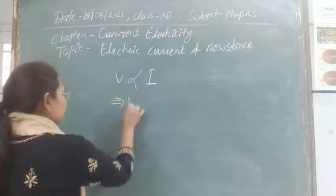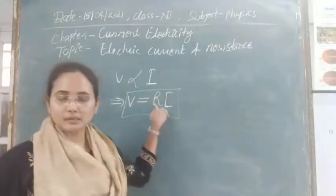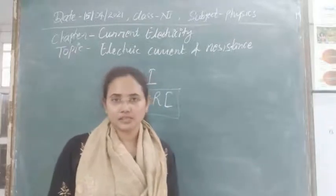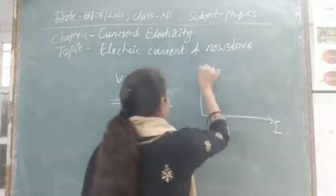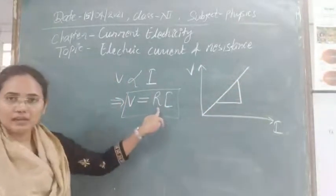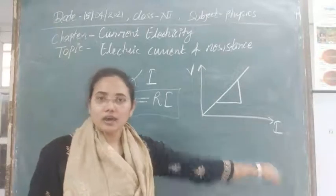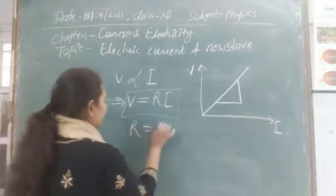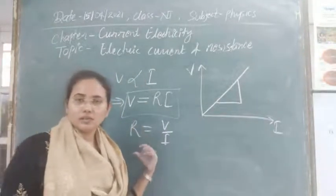If we remove the proportionality, the constant that appears is R, and this constant R is known as the resistance of the circuit. Resistance is defined as the change in potential per unit change in current. If we plot V on one axis and I on the other, the graph is linear, and the slope of this V-I characteristic graph represents the value of R. So R is the slope of the V-I characteristic graph, and this is known as the resistance of the circuit.